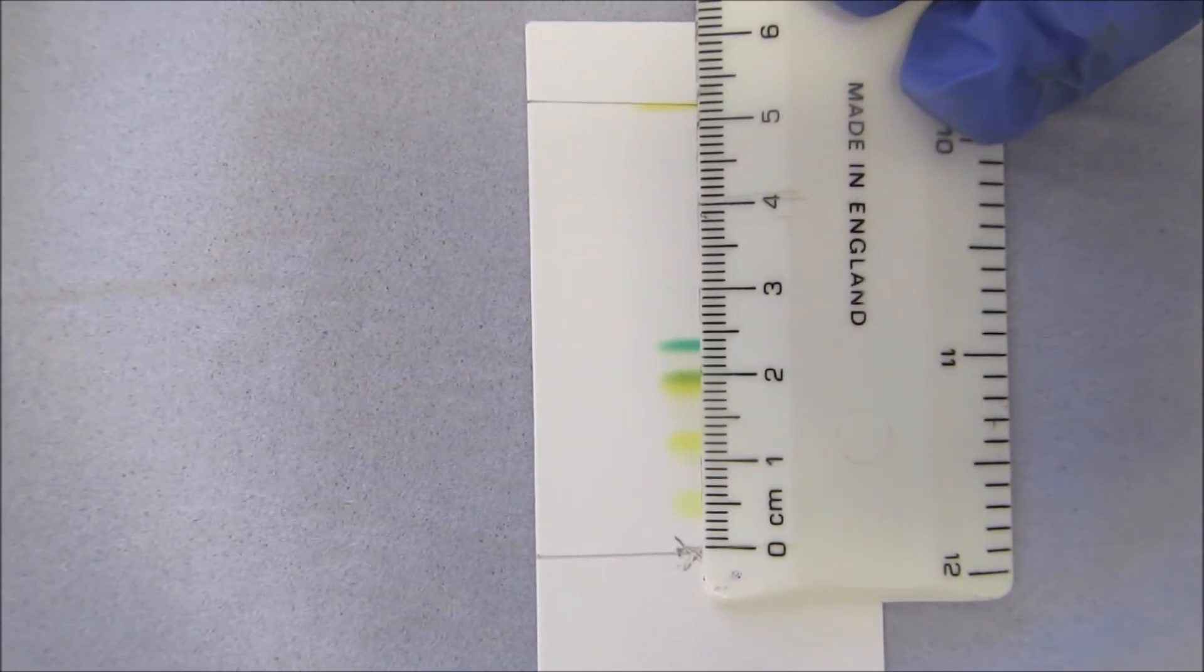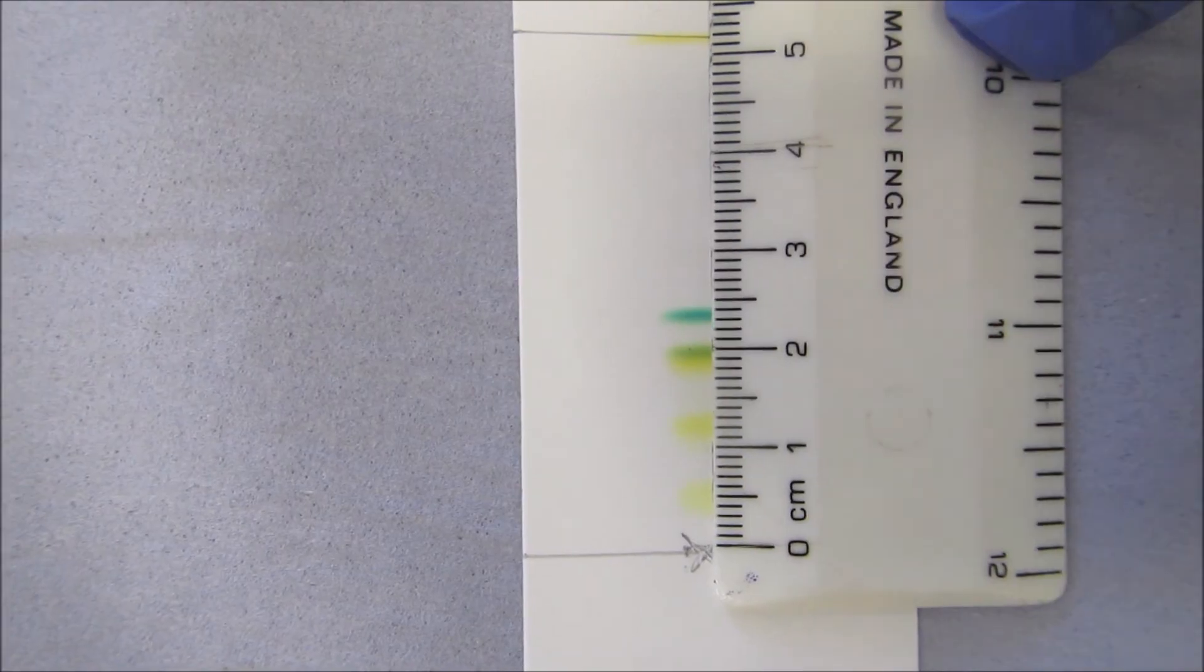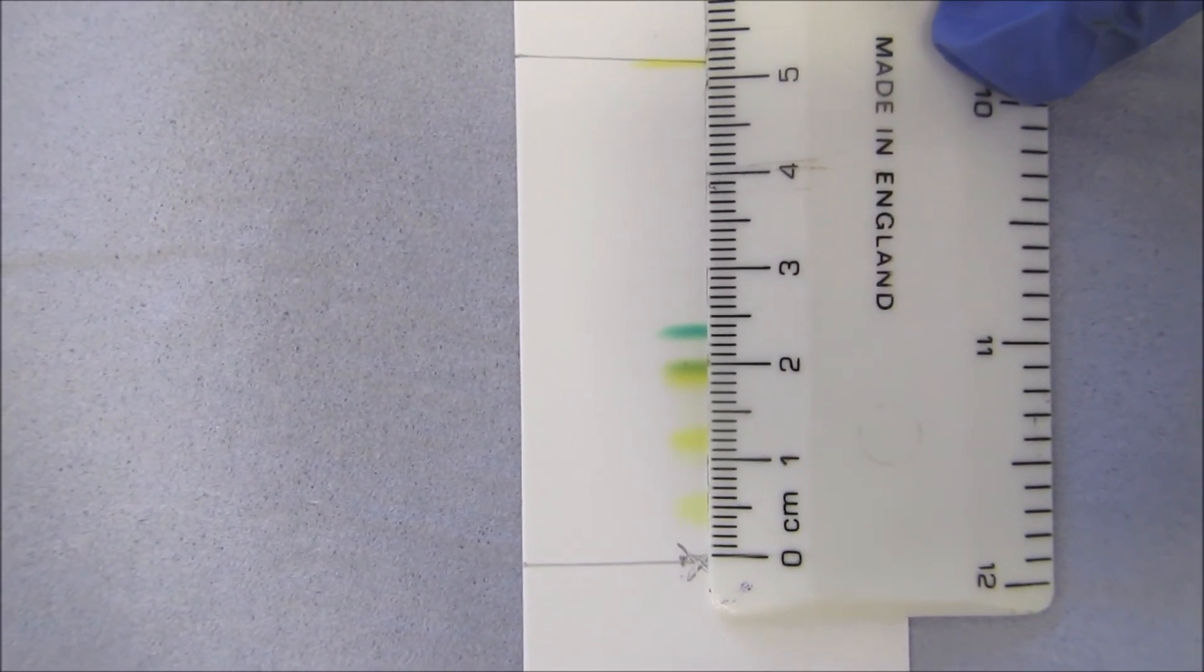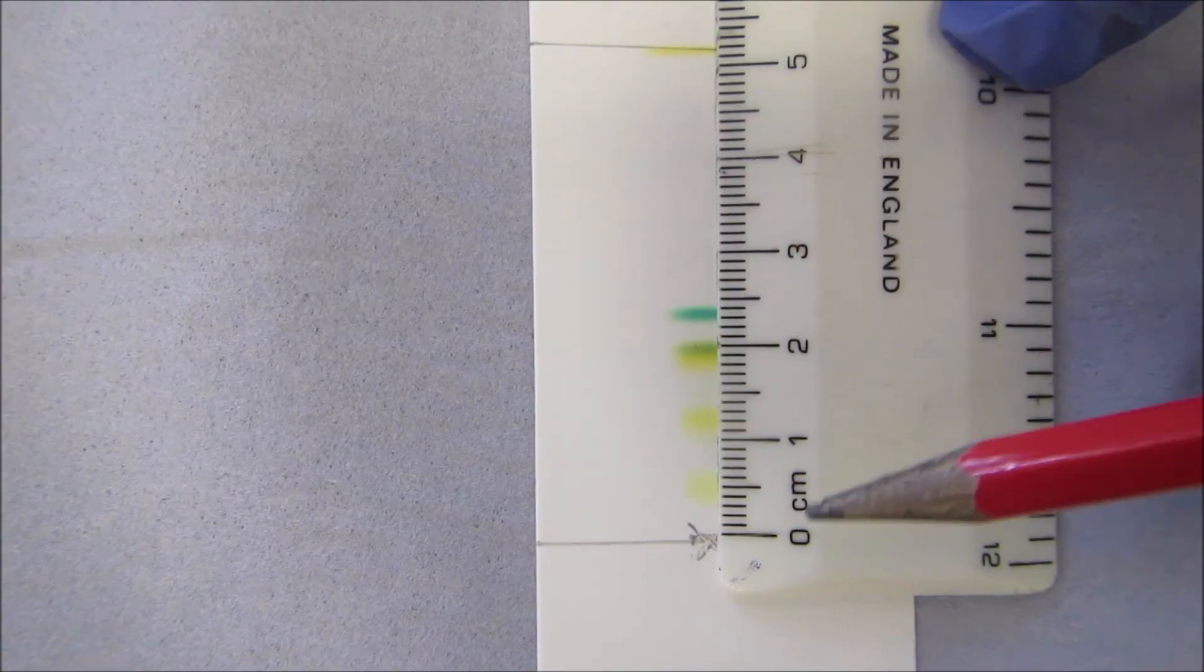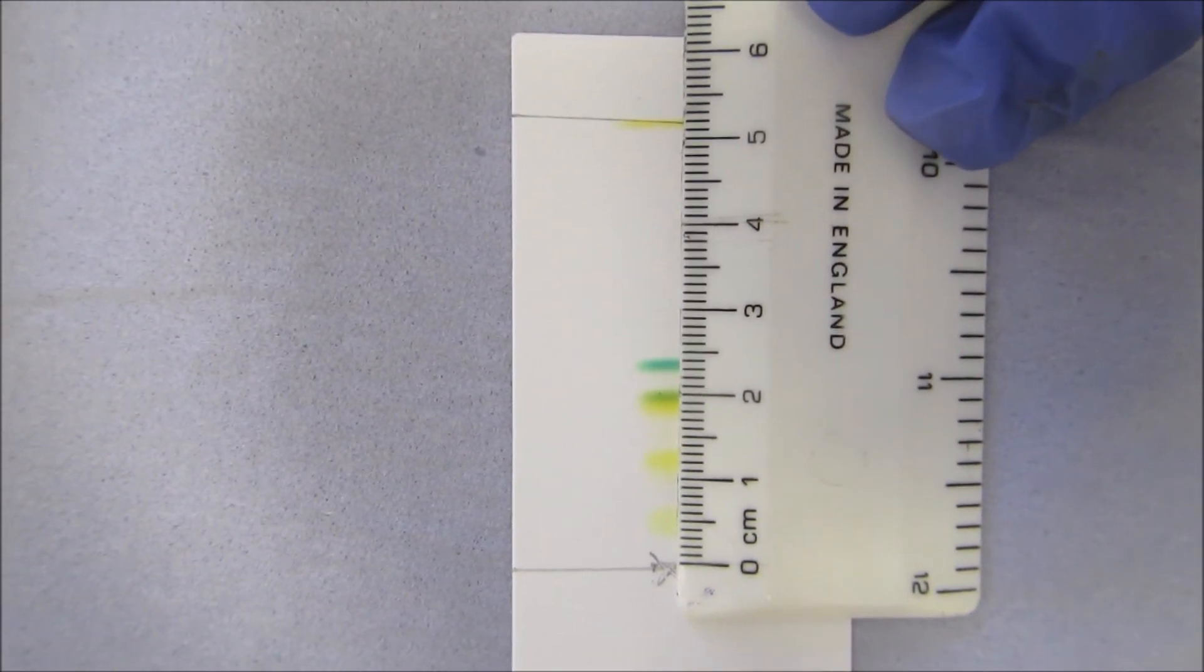From this, you should be able to work out the RF values for each pigment. And then do some research. There's some information on the sheet that might help you to work out what pigment is which.